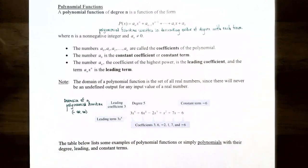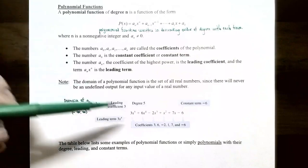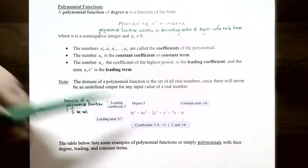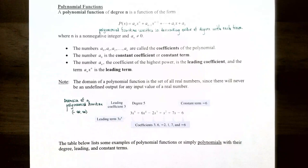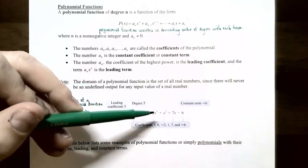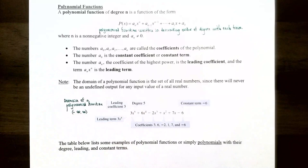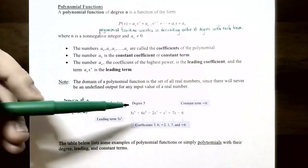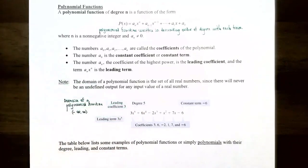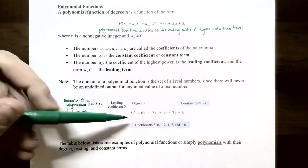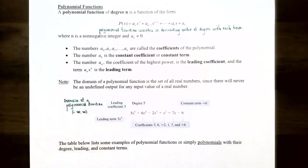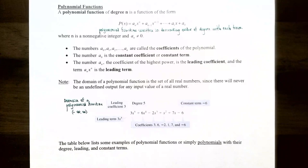For example, consider the polynomial 3x to the 5th plus 6x to the 4th minus 2x cubed plus x squared plus 7x minus 6. The coefficients are 3, 6, negative 2, 1, 7, and negative 6. The highest power of x is 5, so the degree is 5. The leading term is 3x to the 5th, the leading coefficient is 3, and negative 6 is the constant term.